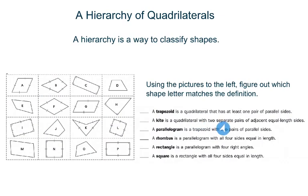A kite is a quadrilateral with two separate pairs of adjacent, which means side by side, equal length sides. So what do you think would be a kite?